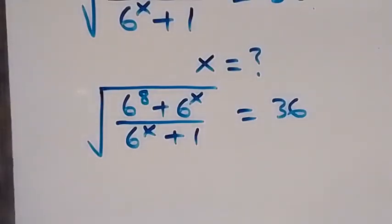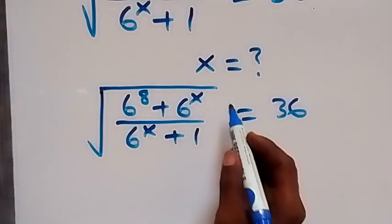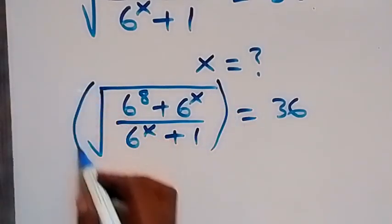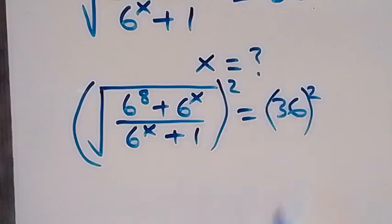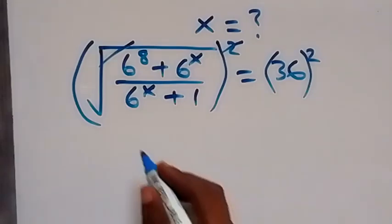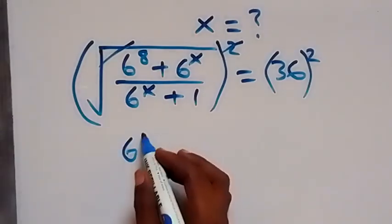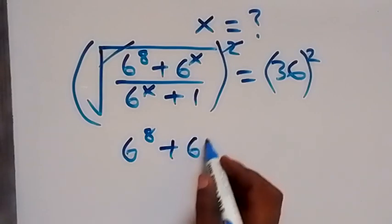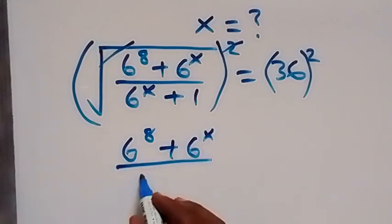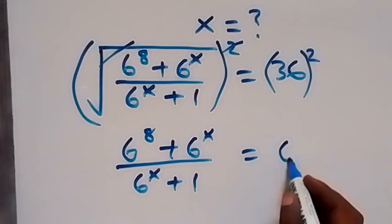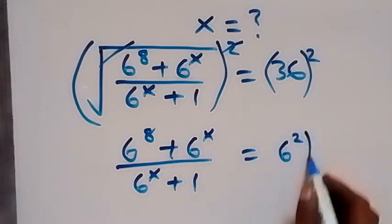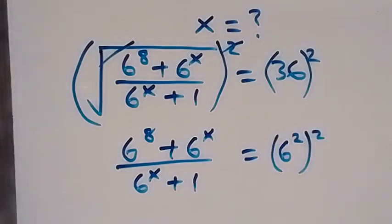From here we can square both sides of this equation. When we square this side we have everything squared here, then we have 36 squared here. This square cancels the square root, and we have 6 raised to power 8 plus 6 raised to power x, over 6 raised to power x plus 1. Let's express 36 as 6 squared, then raised to power 2.